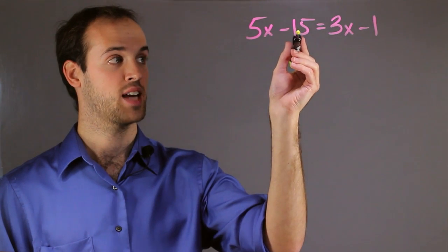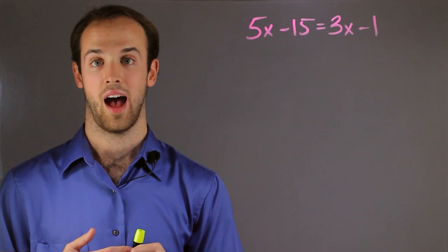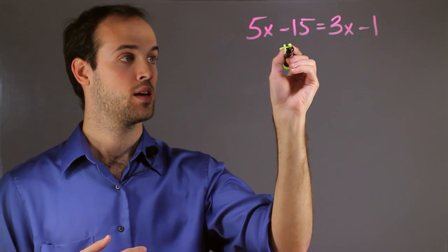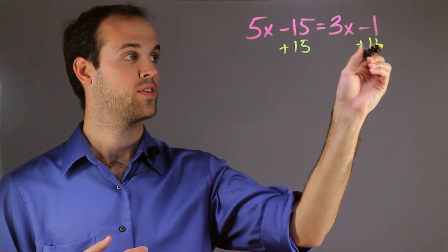So I see this 15 on the left side, and I want to move it over to this side. And since it's being subtracted, I have to add it to both sides. So I add 15 here, and I add 15 here.